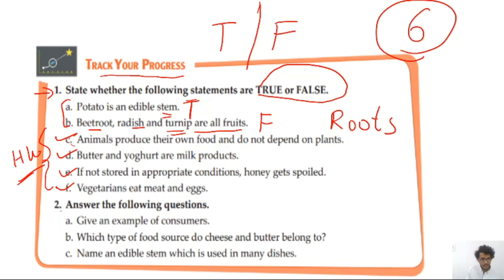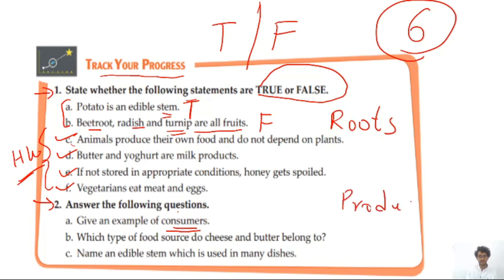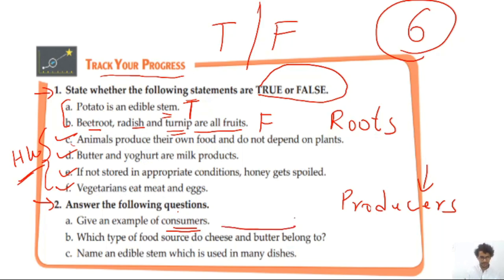Also answer the following questions. Give one example of a consumer — think about who is a consumer. Producers make their own food; consumers don't. Which type of food source do cheese, milk, and butter belong to? This is a bit challenging — think about it.